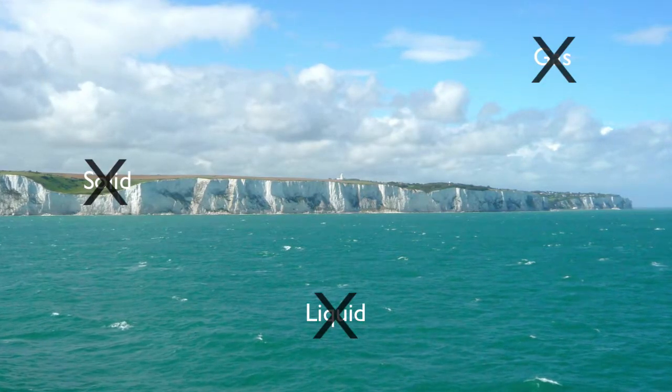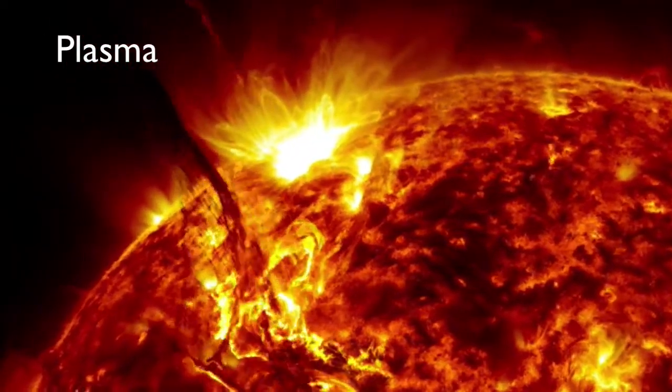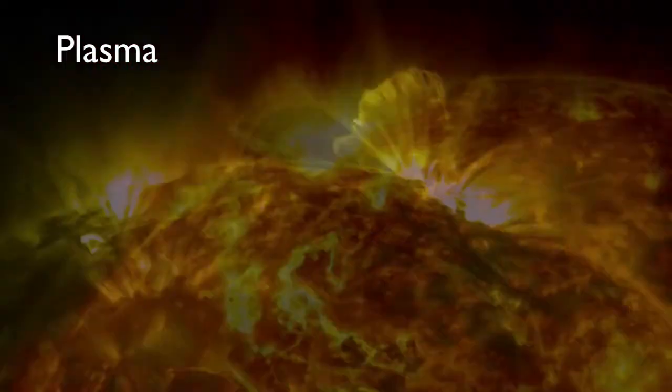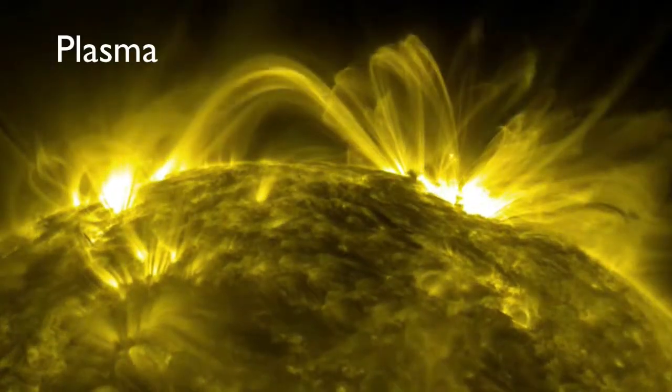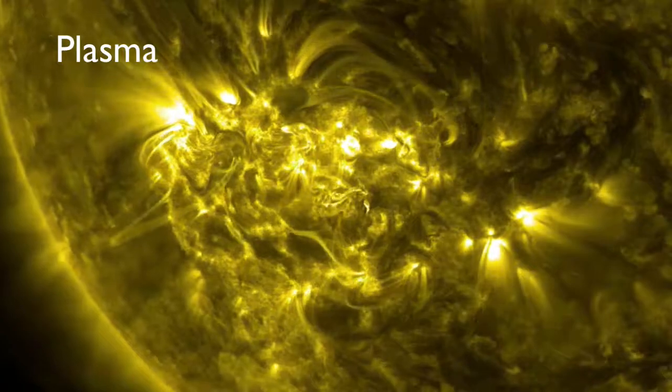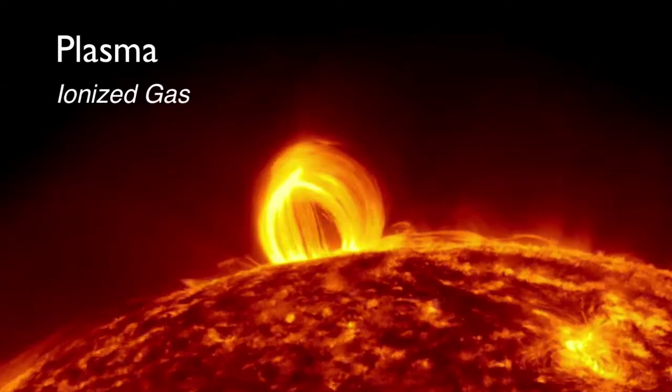There's a fourth state of matter called plasma. Our sun and all stars are huge balls of plasma. This makes plasma the most abundant phase of matter within any solar system. Plasma is neatly described as an ionized gas.